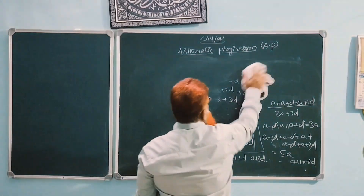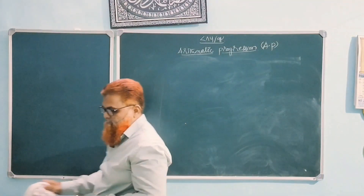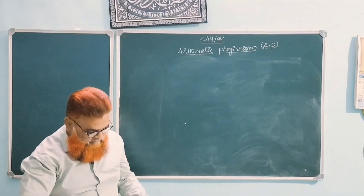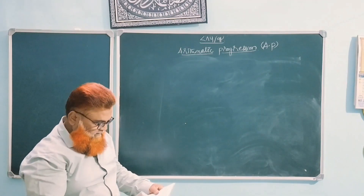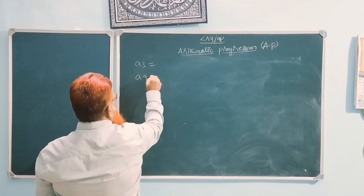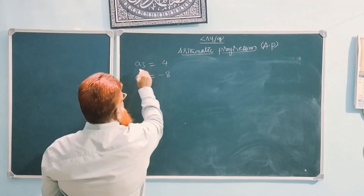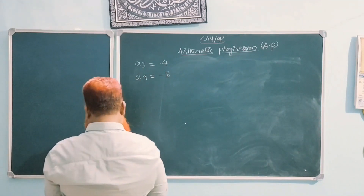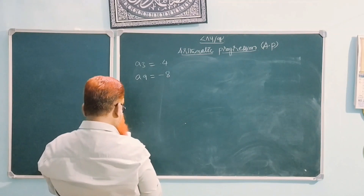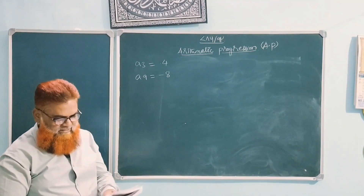Coming to the solution of some problems: the third and the ninth term of an AP are given as 4 and −8 respectively. The third term is 4 and the ninth term is −8. You are asked: which term of this AP is 0?